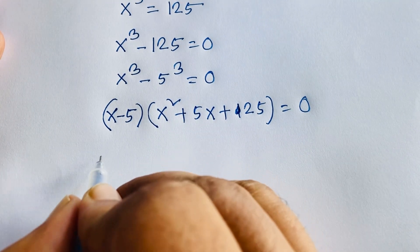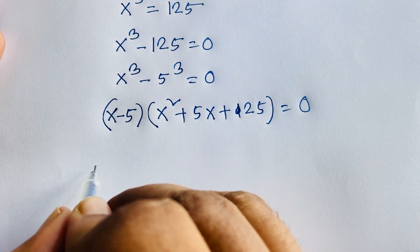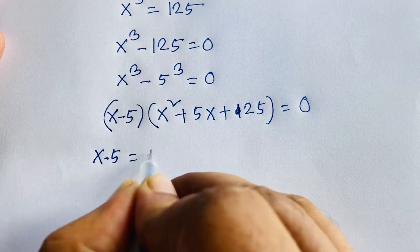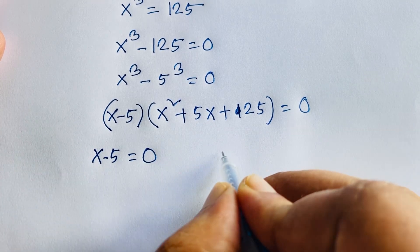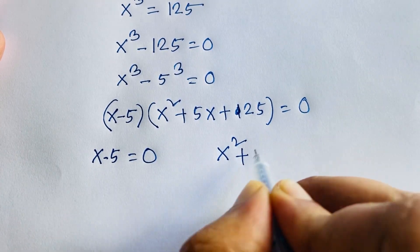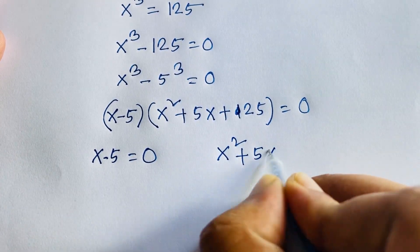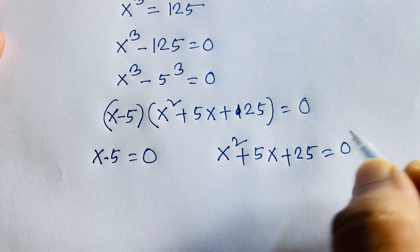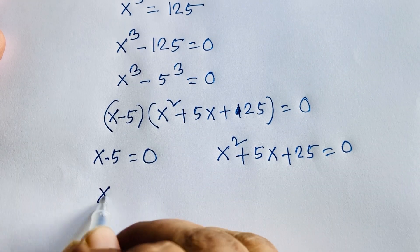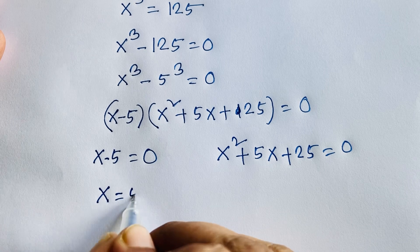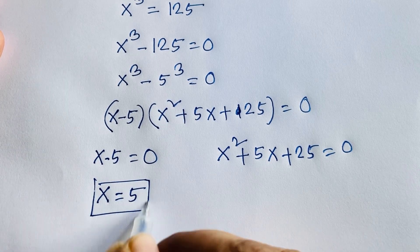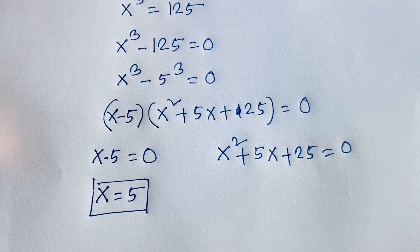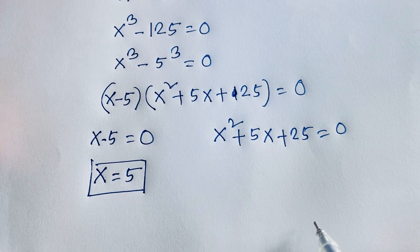So we have two expressions: x minus 5 equals 0, and x squared plus 5x plus 25 equals 0. From the first equation, x is equal to 5. Now for the quadratic equation, we solve for the remaining values of x.